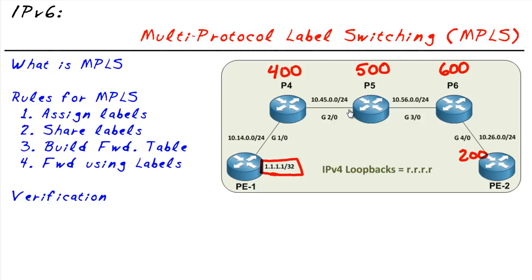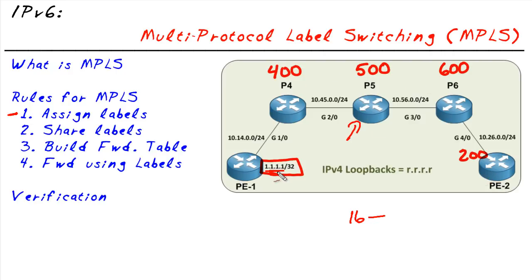For this discussion, pretend that you and I are this router right here — we're P5. The first rule is we need to assign labels. That means we need to take all the routes in our routing table and assign a number to them. We can start at 16 and go into the tens of thousands, so take any number that's not used and assign a label. Let's focus on just one network, and assume that P4, P5, P6, and PE2 have all assigned local labels to this one specific network, following the rule to assign a number to each route in the routing table.